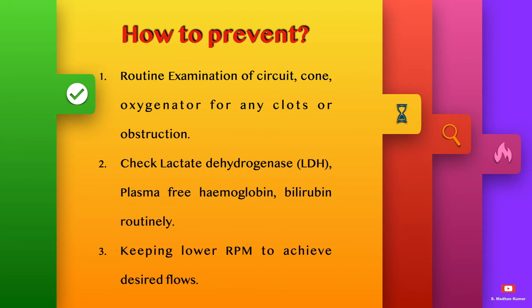To prevent hemolysis: routine examination of the circuit, cannula, and oxygenator for any clots or obstructions; check LDH, plasma free hemoglobin, and bilirubin routinely; and keep lower RPM to achieve the desired flows, which can also decrease the chances of hemolysis.